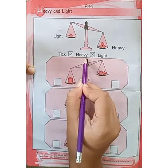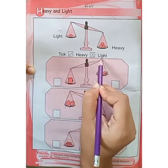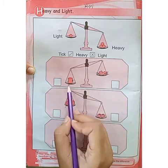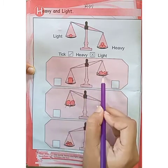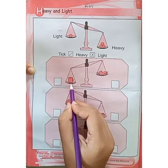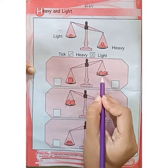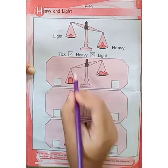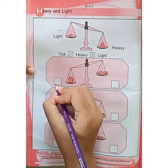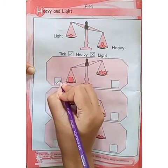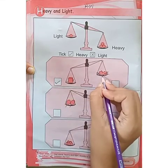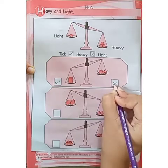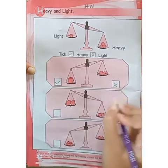You have to tick the heavy one and cross the light one. Look at the next example. This is a mug and this is a leaf. The mug is heavy as compared to the leaf. So we have to tick the heavy one in the box because the mug is heavy and the leaf is light. So we have to cross the leaf in the box.